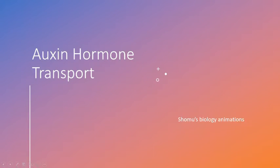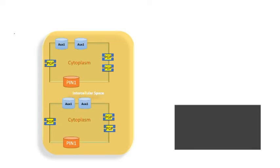Now we will see the auxin hormone transport with the help of an animation - exactly how auxin hormone gets transported. Auxin hormone transport acts in two different ways: one is the polar transport of auxin from the apical meristematic tissue to the bottom, so from the top of the plant to the bottom. And there is another way - the lateral movement of auxin from the top cells to the neighboring cells on the side.